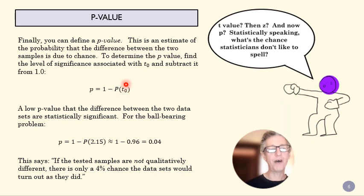So this for 2.15 is probably going to be somewhere around 95%, maybe a little bit higher, 96%. And we subtract it, and we get 0.04. And what that says is if the tested samples are not qualitatively different, there's only a 4% chance that they would turn out like this. In other words, if these two data sets are testing the actual same thing, there's only 4% chance that we'd have numbers that looked quite this different. So a low p-value means there's a high probability that those two data sets are actually different.